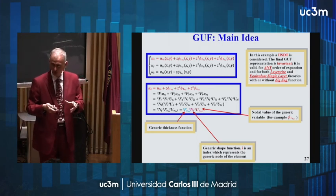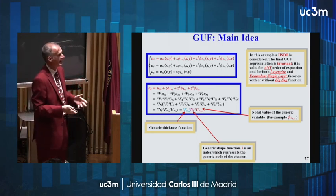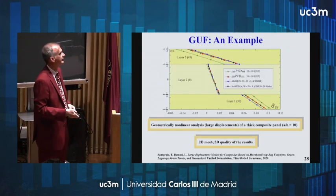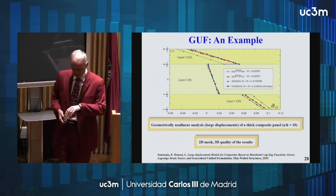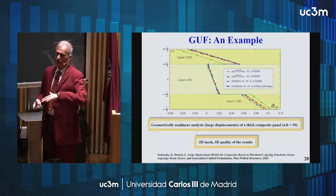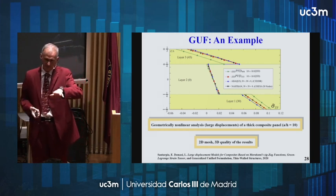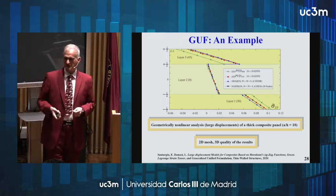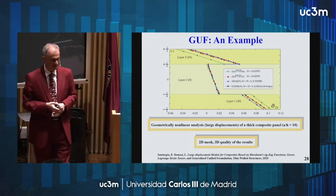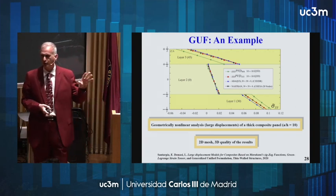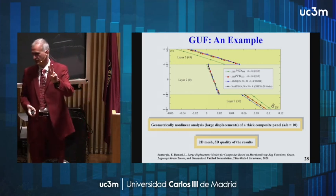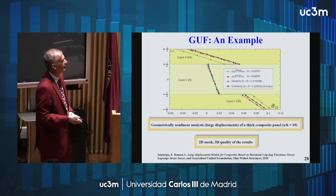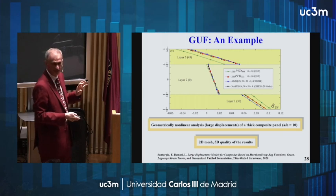You can have all the fidelity you want, and if you don't know what you need, you can experiment. You can have equivalent single layer, zigzag, or layer-wise theories for each direction of interest. You write whatever expansion you have in one single formulation using index notation, apply energy methods — usually the principle of virtual displacement — and solve. You can solve fairly complicated problems, competing against Abaqus solid elements but using only two-dimensional elements, with pretty good accuracy.